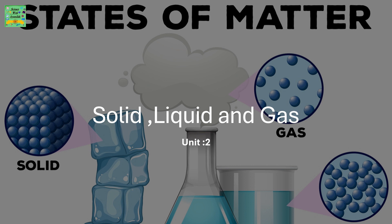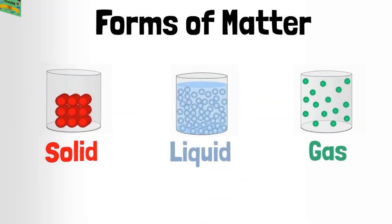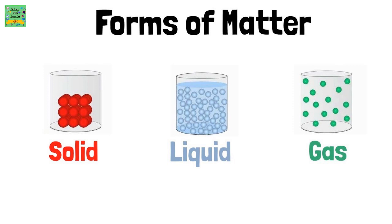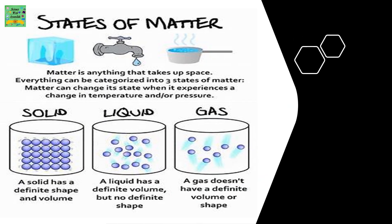Solids, Liquids and Gases — Forms of Matter. There are three forms of matter: solid, liquid and gas. Matter is anything that takes up space, and everything can be categorized into three states of matter. Matter can change its state when it experiences a change in temperature and/or pressure.